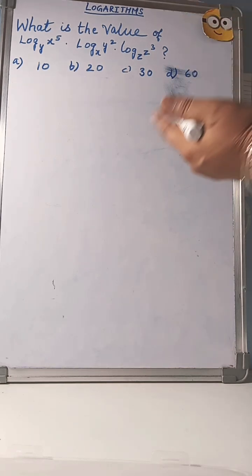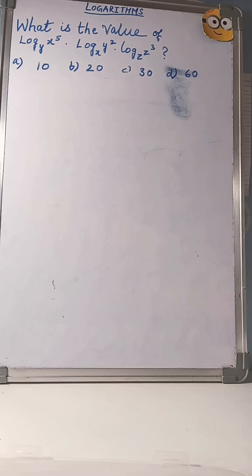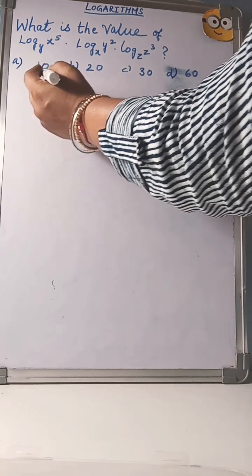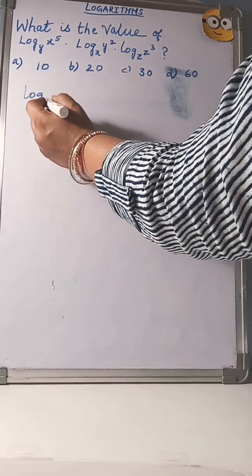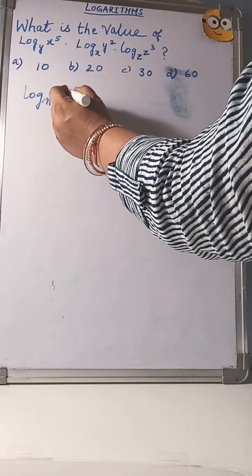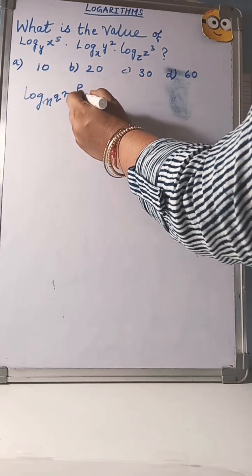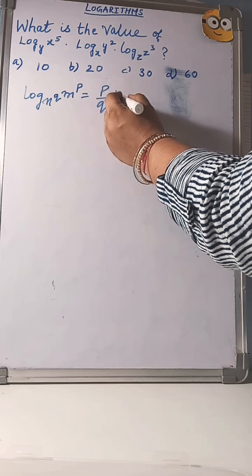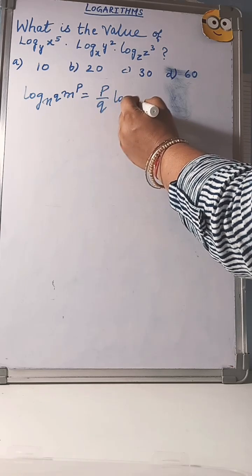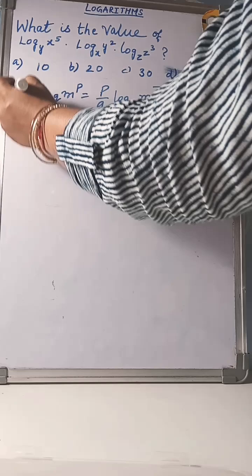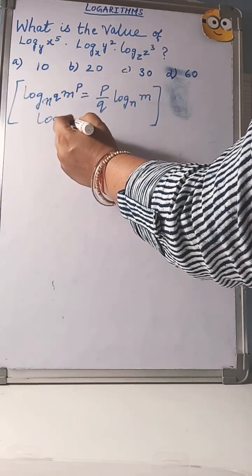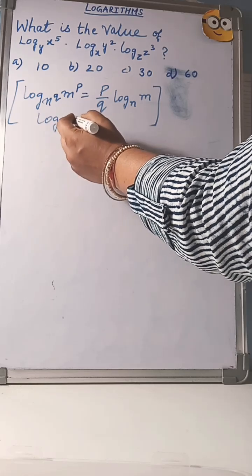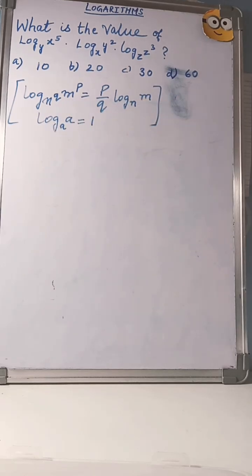If you know some properties of logarithm, then it will be very easy for you to solve this question. Here I am using some properties: log base n to the power q and m to the power p, this will become p by q log base n. This property I am using and one more property: log a to the base a, when base is same, then value is 1.